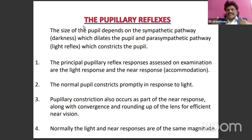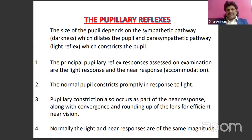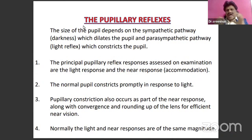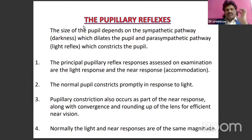Pupil size is a delicate balance between sympathetic and parasympathetic. An important question: if the pupil is controlled by sympathetic causing dilatation and parasympathetic causing constriction, after death when both are affected, the pupil should be in the mid position. But what we see in clinical practice is that pupils are dilated after death — not in the mid position. So why are pupils dilated after death instead of being in mid position?